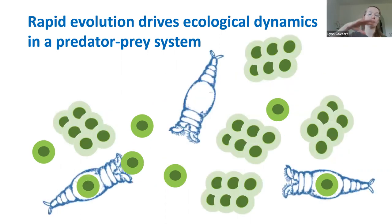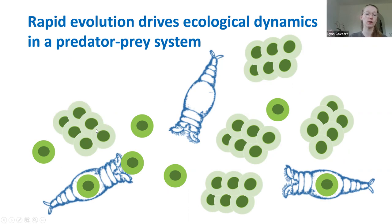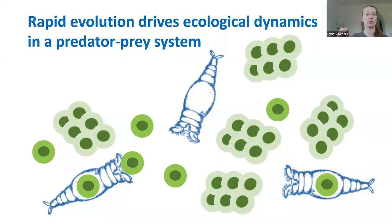Because the undefended genotype is good food for the predator, the predator also increases in abundance. Consequently, at high predator densities, the defended genotype gets an advantage and increases in abundance. However, because it's bad food for the predator, predator density decreases again, giving the undefended genotype a competitive advantage — and the cycle restarts.